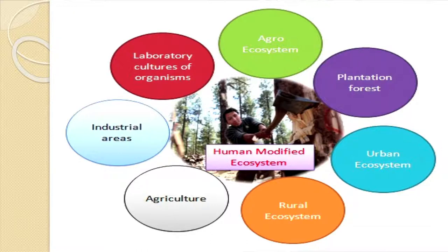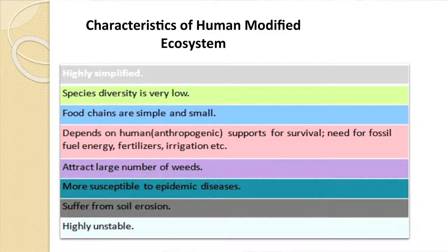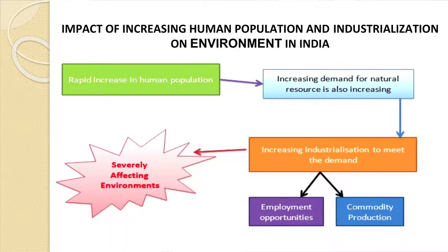And lastly, there is laboratory culture of organisms. Characteristics of human modified ecosystems are: they are highly simplified, species diversity is very low, food chains are very simple, and they depend upon human or anthropogenic support for survival in the form of fossil fuel energy, fertilizer, irrigation, etc. They attract large numbers of weeds because we have modified the environment, causing invasions by organisms that find such environments more suitable. They are more susceptible to endemic diseases, suffer from soil erosion, and are highly unstable.